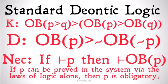Here are our three axioms. Axiom K is: it's obligatory that P implies Q, implies that it's obligatory that P implies it's obligatory that Q. Axiom D is: it's obligatory that P implies it's not the case that it's obligatory that not P. And the necessitation rule is: if we can prove P just from the rules of logic, or if P is basically a tautology within the system, then it's obligatory that P.